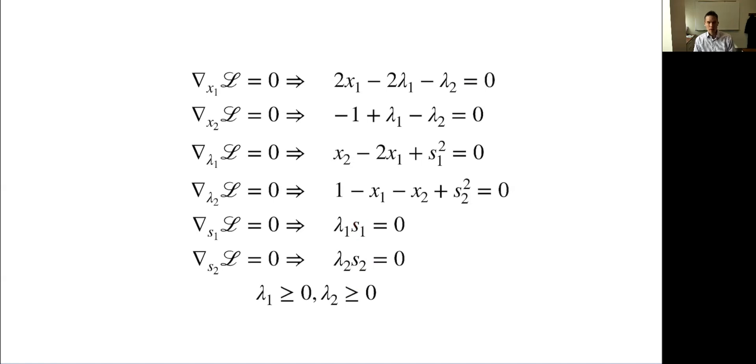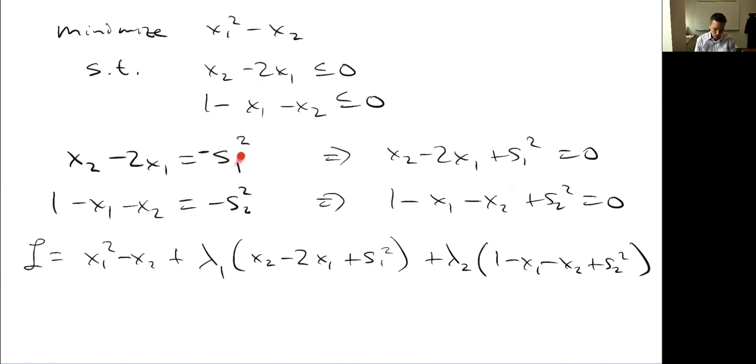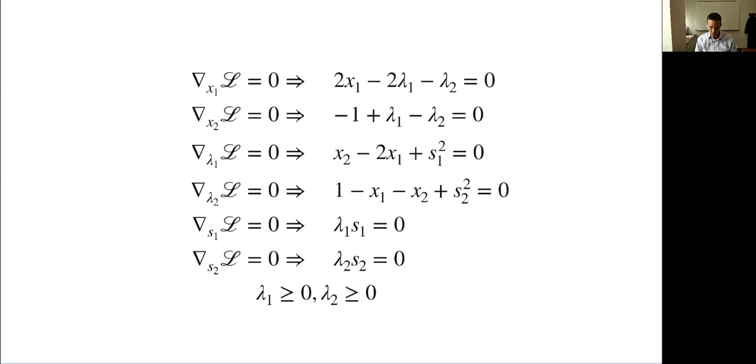Let's just recall again what this means. What does it mean if s1 is 0? This is that first constraint. If s1 is 0, or we can go back to here and look at it, if s1 is 0, that means this constraint is active. It's x2 minus 2x1 equals 0. It's an active constraint. So if s1 is 0, that means my first constraint is active. What does it mean when lambda 1 is 0? You may remember when we talked about the KKT conditions, we saw that lambda equals 0 occurs if the constraint is inactive.